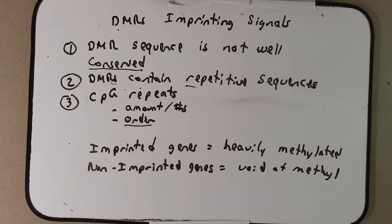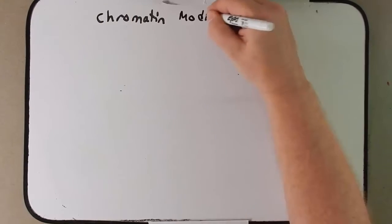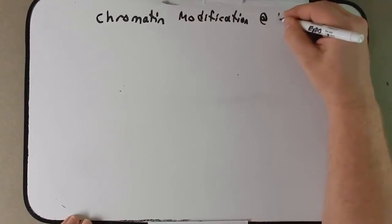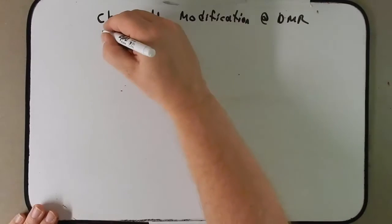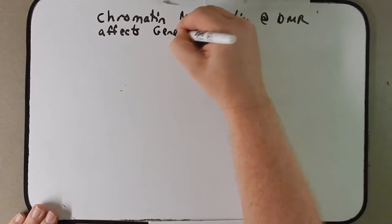So that's kind of a sad ending to this story. We don't really know the answer yet, but the good news is that means there's a lot of work to be done. Now we don't know much about the signals, but there is some suggestion that chromatin modification at the DMR affects gene imprinting.